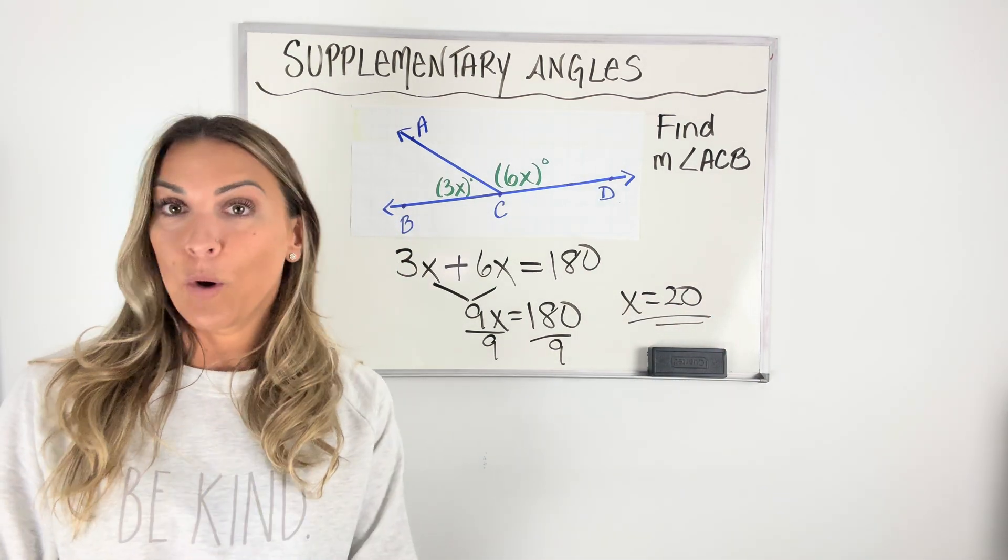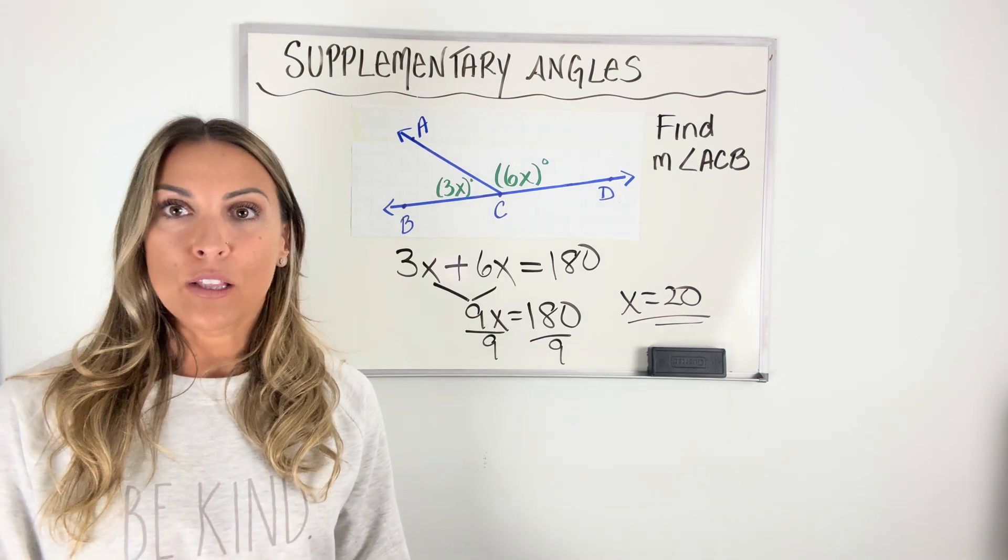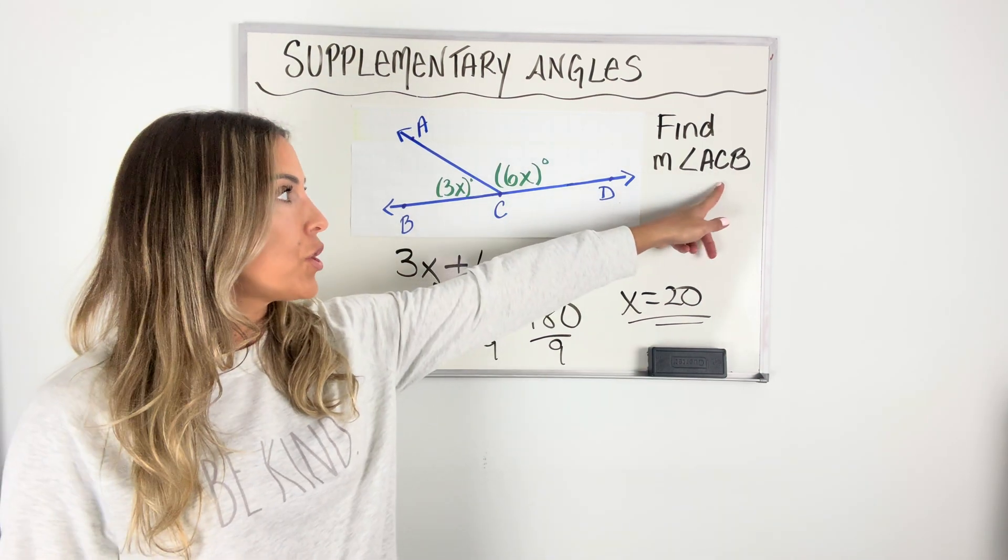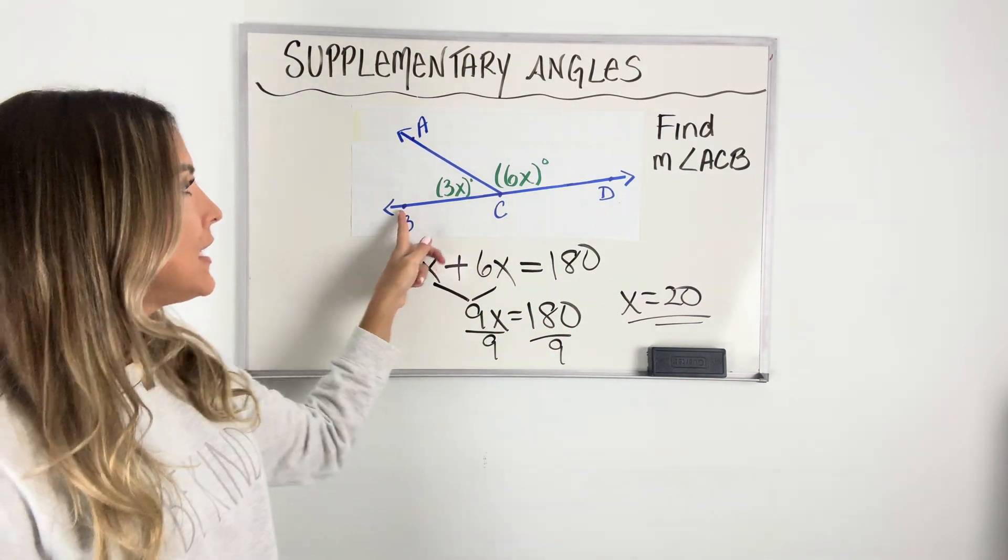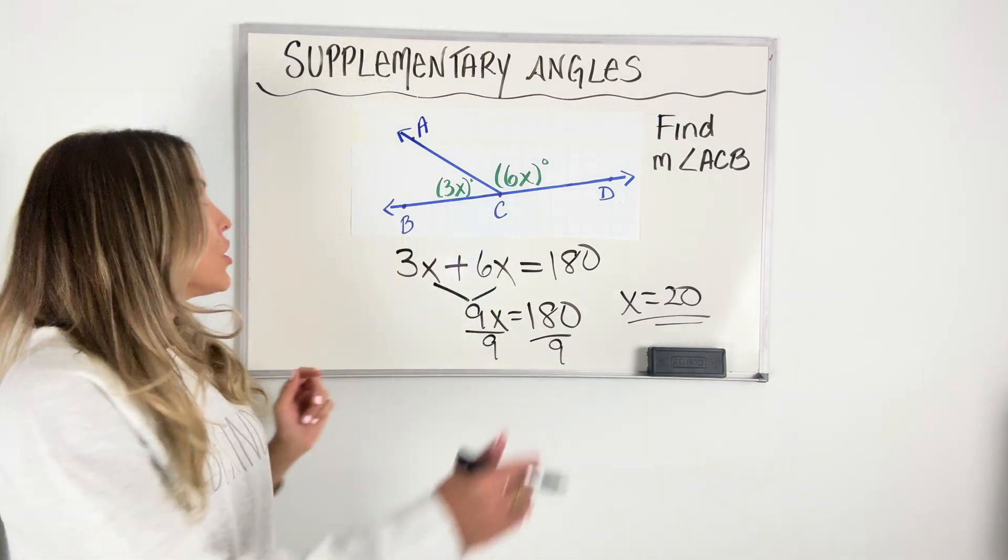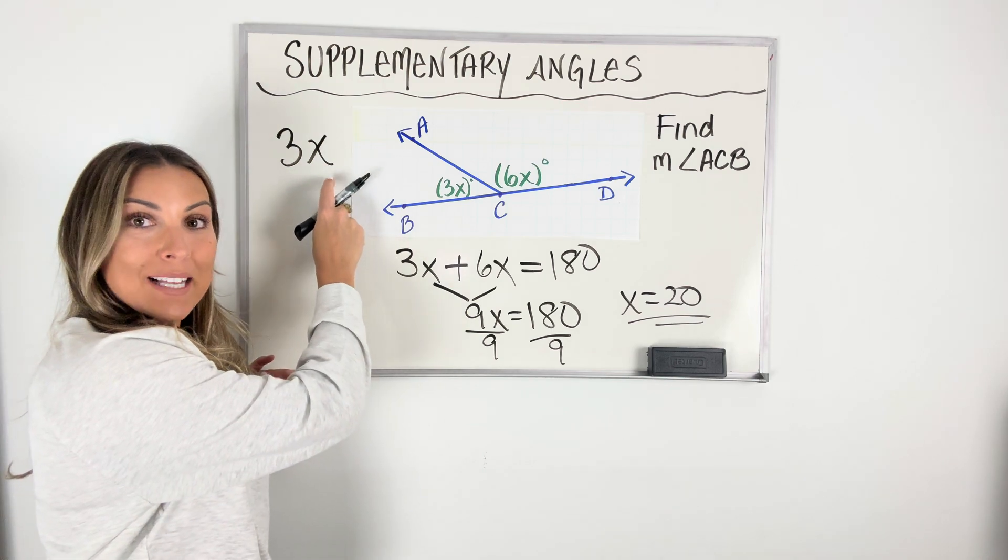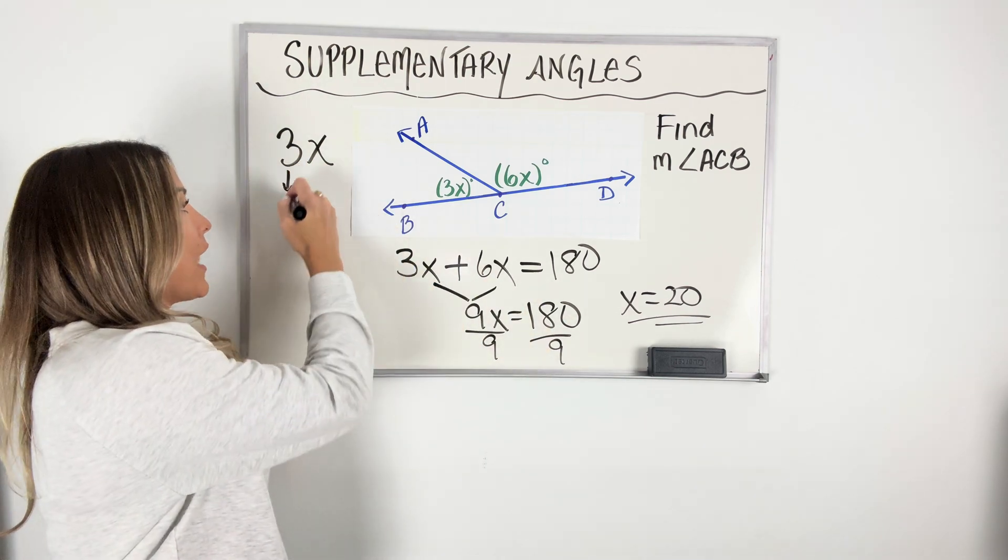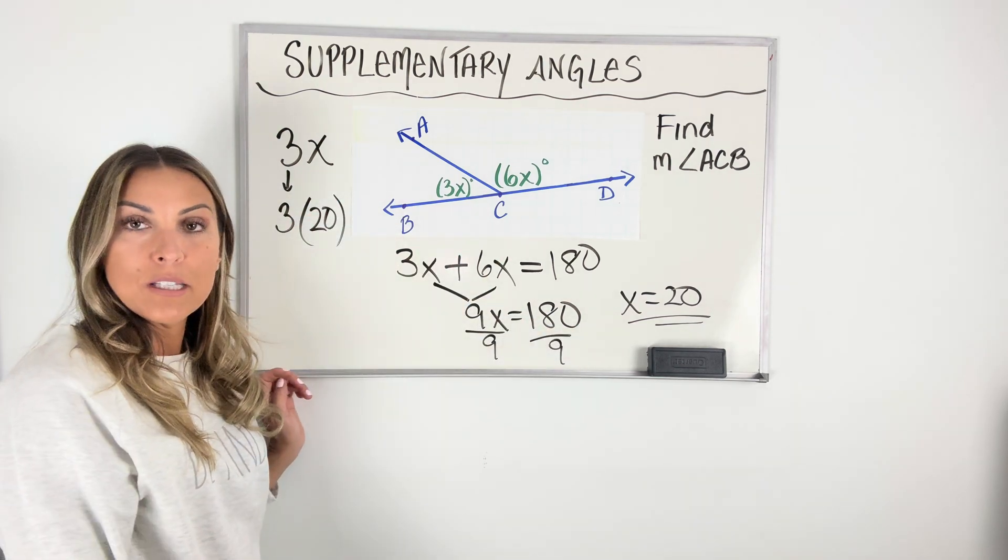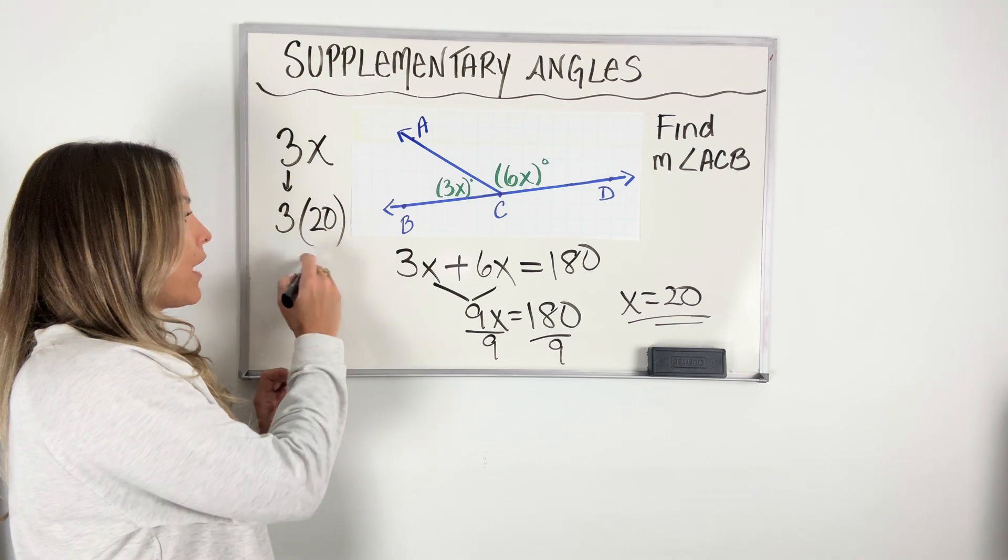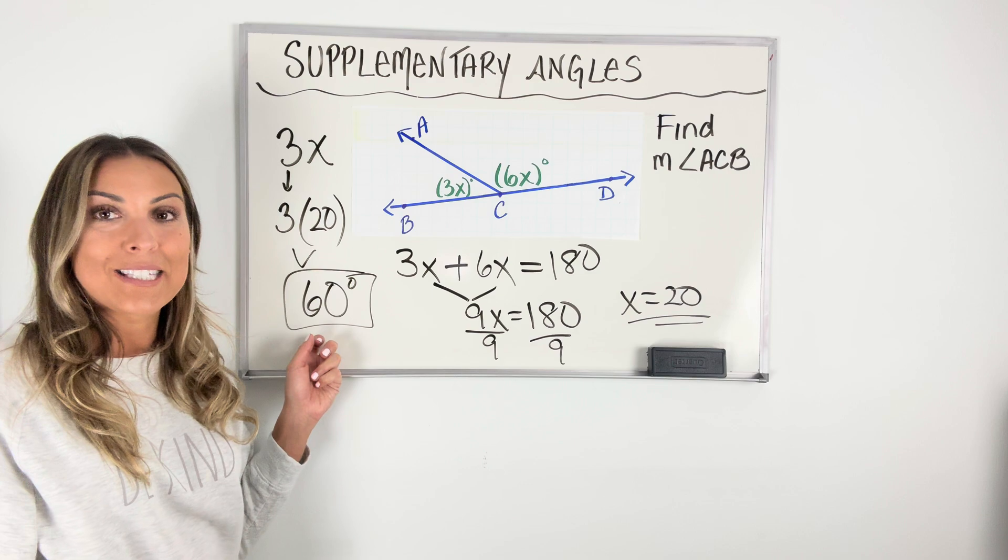The problem didn't ask me what X was. I had to figure out what X was so that I can solve the problem. But X is not the final answer. My measure that I'm looking for is ACB. So when I look at ACB, I see that the measure of angle ACB is 3X. So what I'm looking for is the value of 3X. Well, now I know what X is because I solved my equation. So I'm going to go ahead and replace that X in parentheses with the value that I found it to be, which is 20. And when I multiply 3 times 20, that's going to give me the measure of the angle I was looking for, which is 60 degrees.